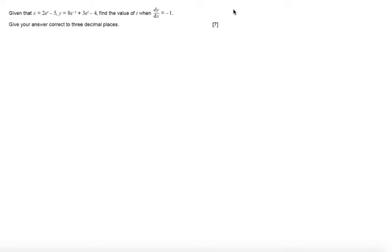So in this question we are looking at doing parametric differentiation. I need to find an expression for dy by dx, and to do that I need to use the expression that dy by dx is equal to dy by dt over dx by dt.